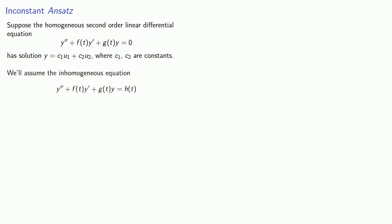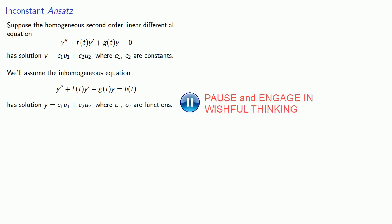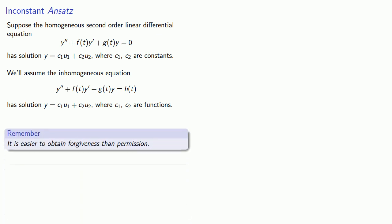Now we'll assume the inhomogeneous equation has solutions y equals c1u1 plus c2u2 where c1 and c2 are functions. Remember, it is easier to obtain forgiveness than permission. We can just try it out and see if we actually get a solution. Let's see how that might work.